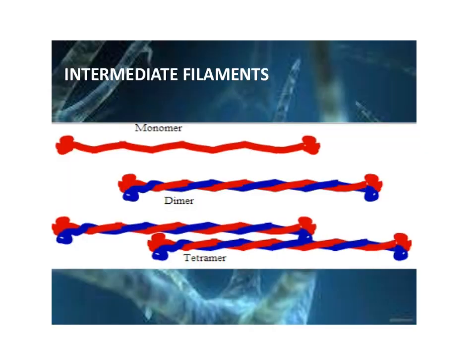The intermediate filaments can exist as monomers or dimers, or they can form tetramers of any type of proteins, which includes keratin, desmin, or vimentin.